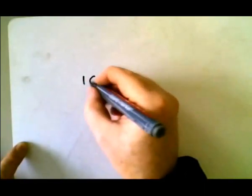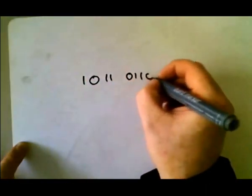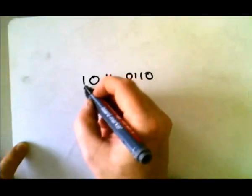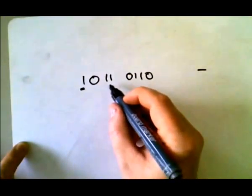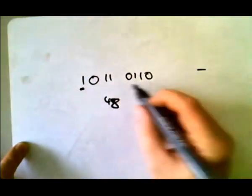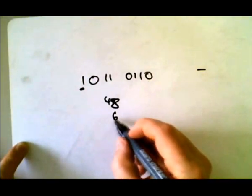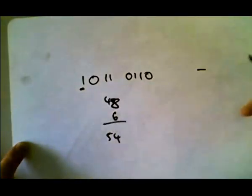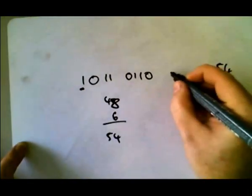We'll find another one. Again, the most significant bit for the sign means it's negative. Here we've got 32 and 16, that's 48. And here we've got 2 and 4, that's 6. So we've got 54. So this number is minus 54.